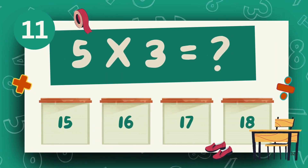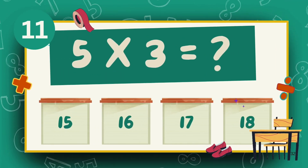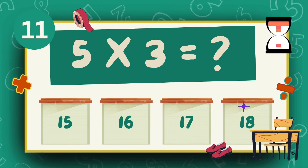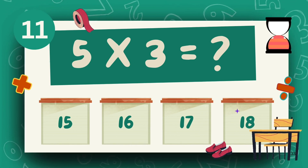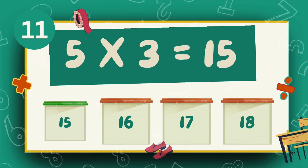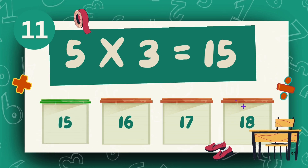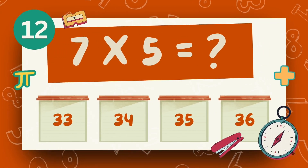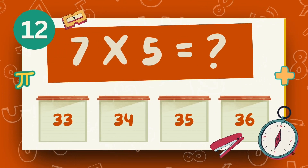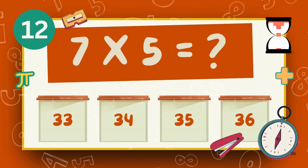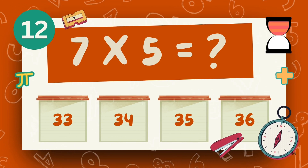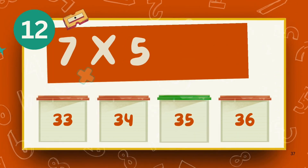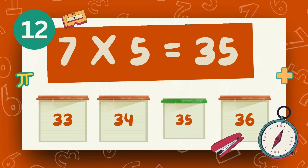What is 5 multiply 3? The answer is 15. What is 7 multiply 5? The answer is 25.